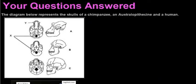In this video we'll be checking out potential questions that can be asked from the diagram down here. The diagram below represents the skulls of a chimpanzee, an Australopithecine, and a human. Before you look at any questions, take your pencil and try to identify the three skulls.